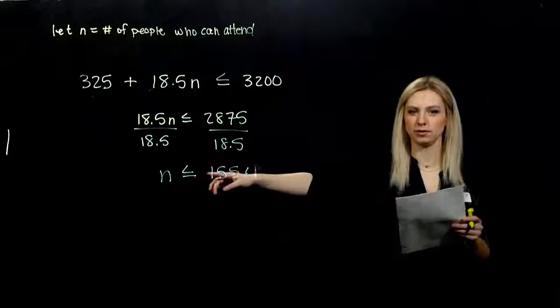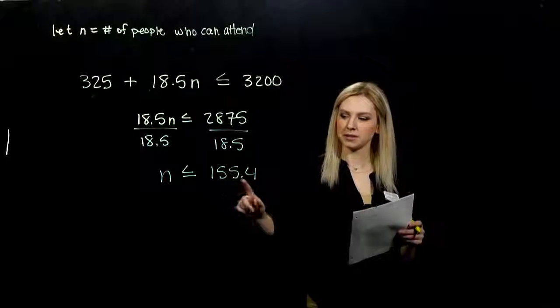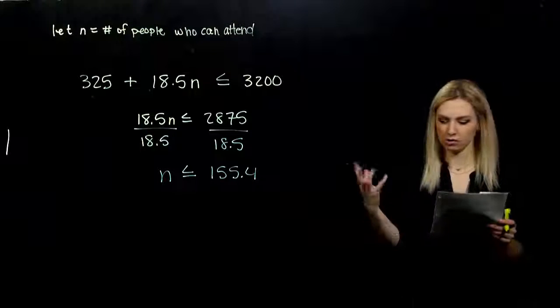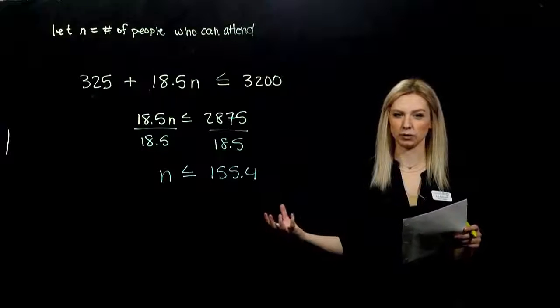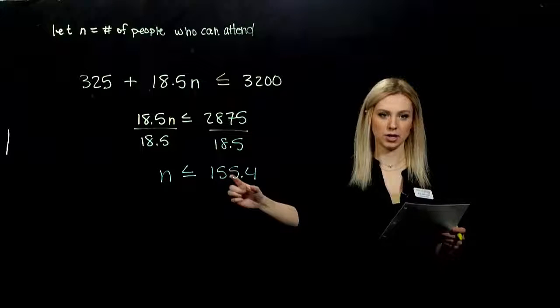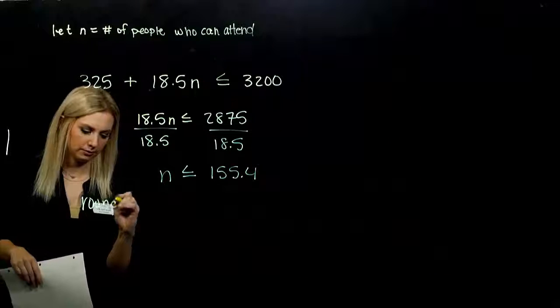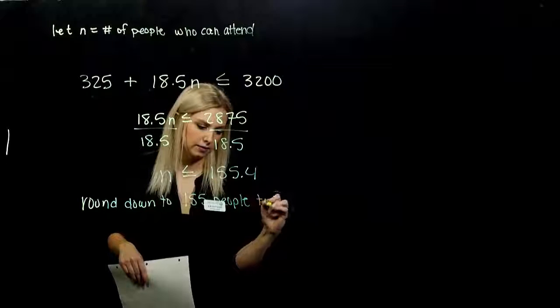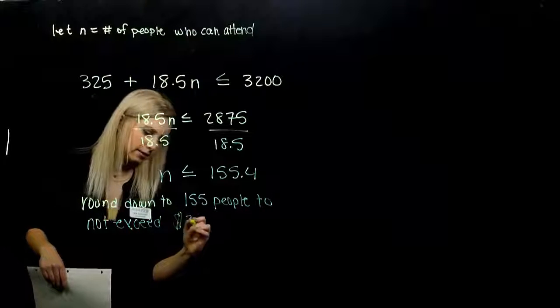So we solved for the N value. But again, what is N? Number of people. So it doesn't make sense to have .4 of a person. So do we want to round up or do we want to round down to have a more logical answer? Because I can't exceed $3,200. N has to be less than or equal to this value, so we want to round down. So we want to round down to 155 people to not exceed that $3,200 budget.